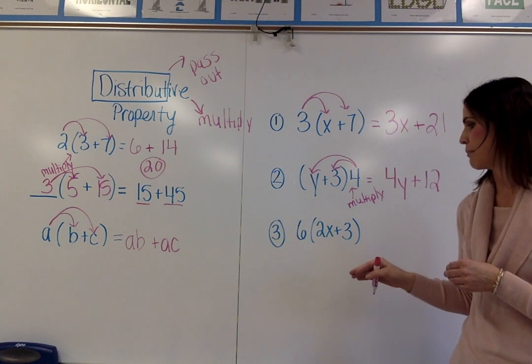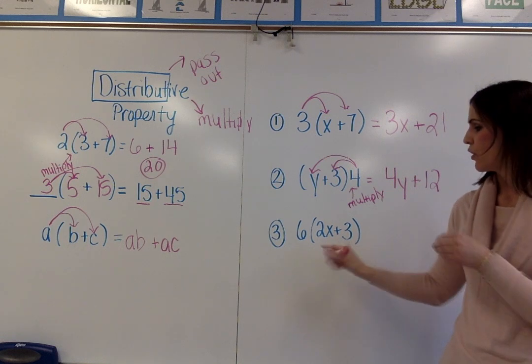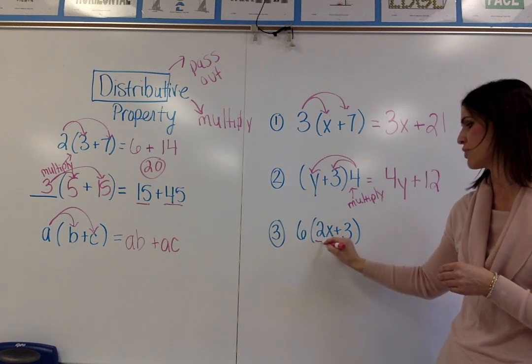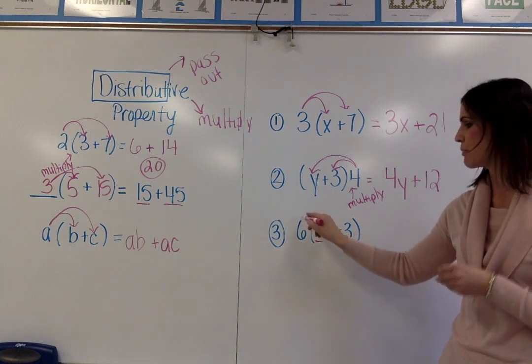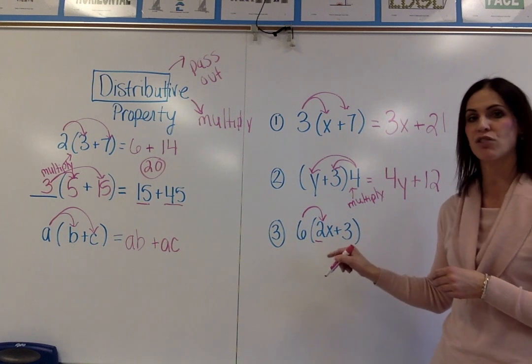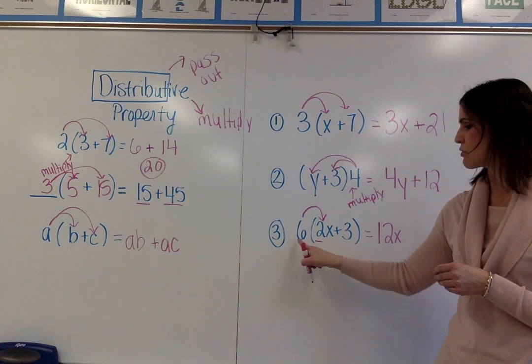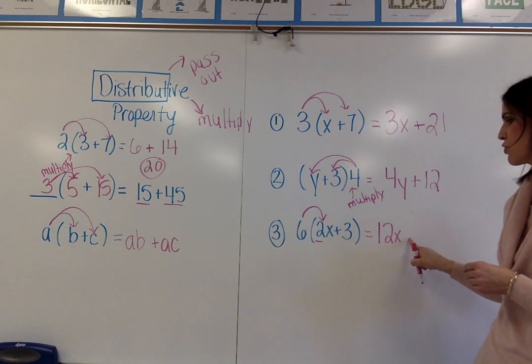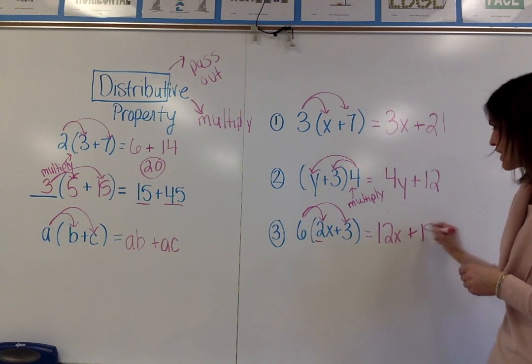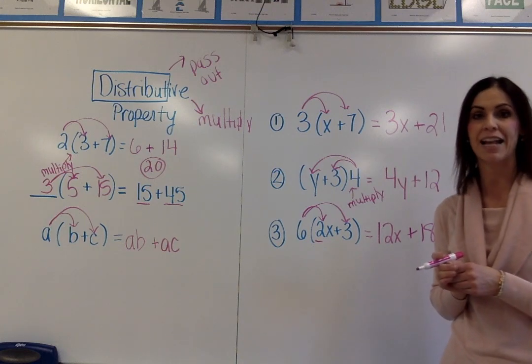In the last example, I have 6 times the quantity 2X plus 3. Inside the parentheses, I have a coefficient of 2 and a variable X. You are simply going to multiply 6 times the coefficient 2, which is 12, and then I'm going to put the X. So 6 times 2X is 12X, plus 6 times 3 is 18. So my equivalent expression is 12X plus 18.